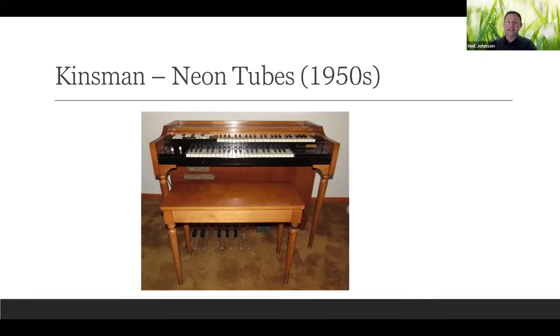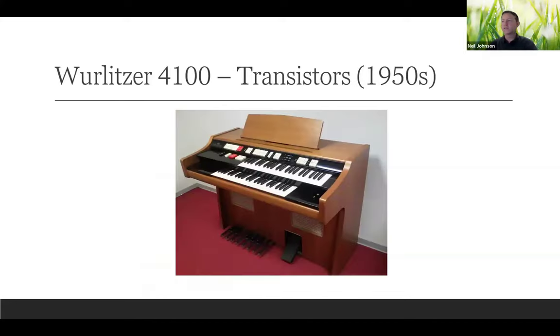Pushing further the electronic generation of tones, in the 1950s you had organ companies like Kinsman using neon tubes as oscillators. They're used for generating tones, but you can also use neon tubes for generating dividers. You have 12 oscillators giving your top octaves, then divide down for the other octaves. As the cost of transistors came down, home organs used high frequency oscillators for the top 12 notes.